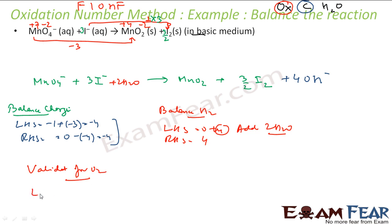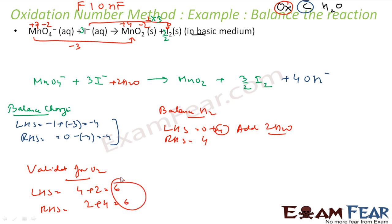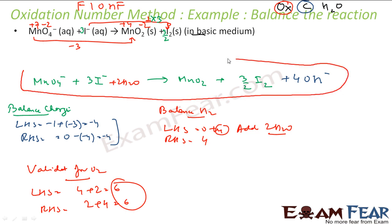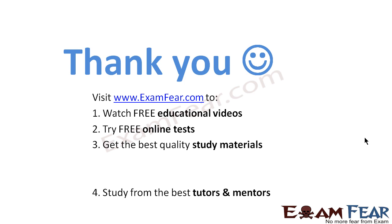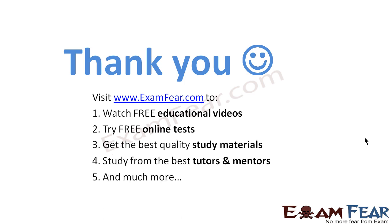Validate oxygen: LHS has 4 (from MnO₄⁻) plus 2 (from 2 H₂O) = 6. RHS has 2 (from MnO₂) plus 4 (from 4 OH⁻) = 6. Both sides equal 6 — oxygen is balanced and the reaction is correct. To summarize: first balance oxidation numbers, then charge, then hydrogen, then validate oxygen. Thank you — visit ExamFear.com to watch free educational videos.